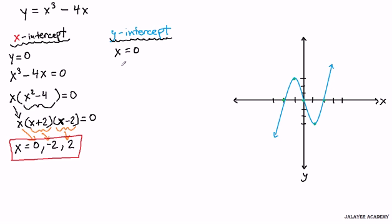So if we set x equal to 0, we just get y equals 0 cubed minus 4 times 0, which is just y equals 0 minus 0, y equals 0. So our y-intercept is just at y equals 0.